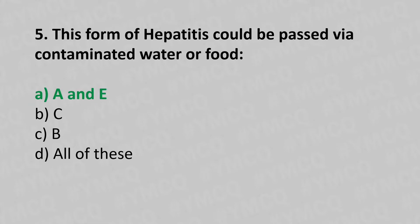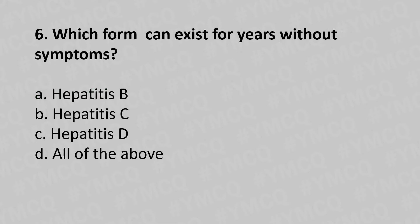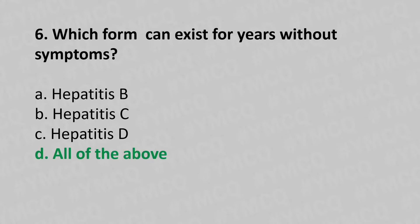Now let's move to question number 6. Which form can exist for years without symptoms? Option A, hepatitis B. Option B, hepatitis C. Option C, hepatitis D. Option D, all of the above. And the answer is... Option D, all of the above.